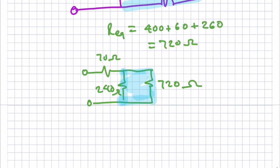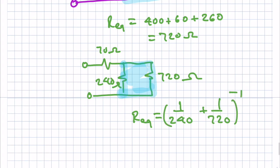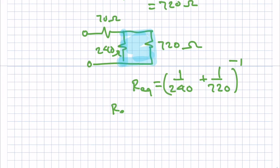Alright, so to get the equivalent resistance of the two in parallel, it's 1 over 240 plus 1 over 720 inverse. And you can calculate that, and I get that equivalent voltage to be 180.